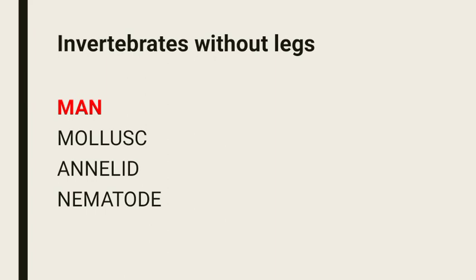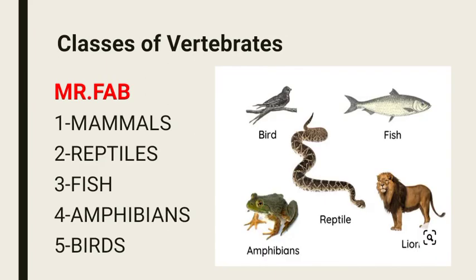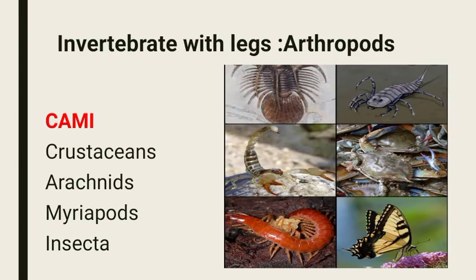There are five classes of vertebrates, and we can remember them by learning the name MR. FAB, which stands for Mammals, Reptiles, Fish, Amphibians, and Birds.